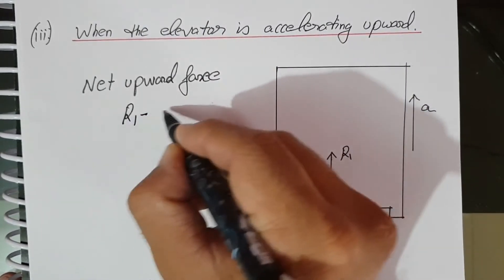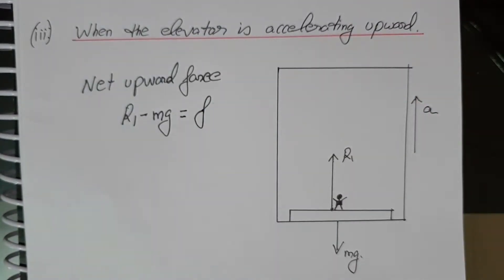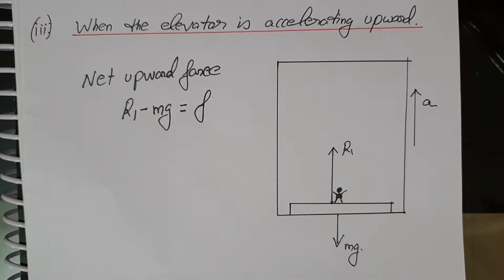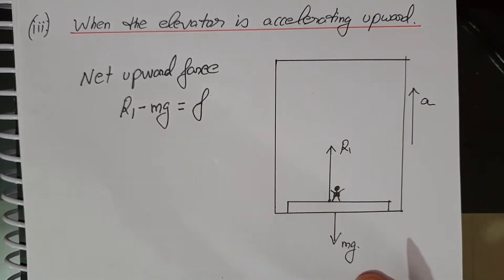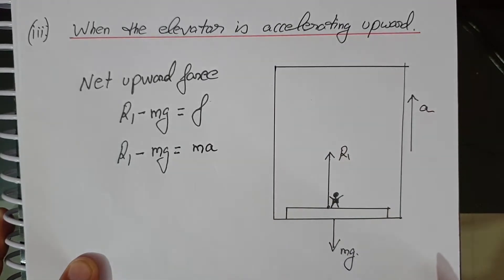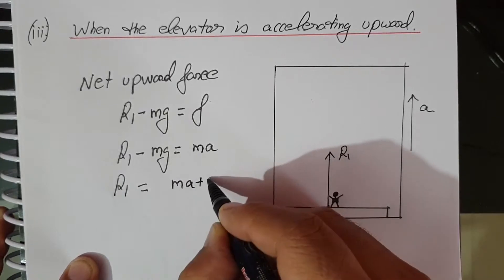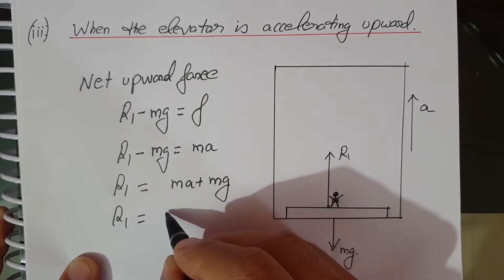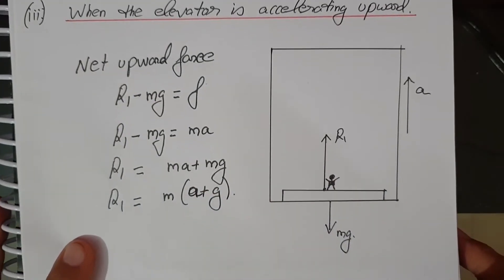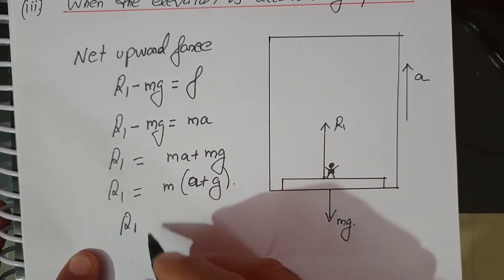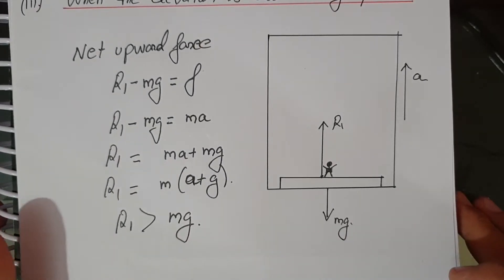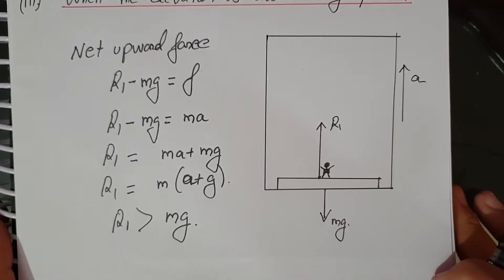The net upward force is R1 minus mg equals F. By Newton's second law, F equals M times A. So R1 minus mg equals MA. Therefore R1 equals MA plus mg, or R1 equals M(A plus g). From this it is clear that R1 is greater than mg, because R1 equals MA plus mg. Hence the apparent weight of the person becomes more than the actual weight when the elevator is accelerating upward.